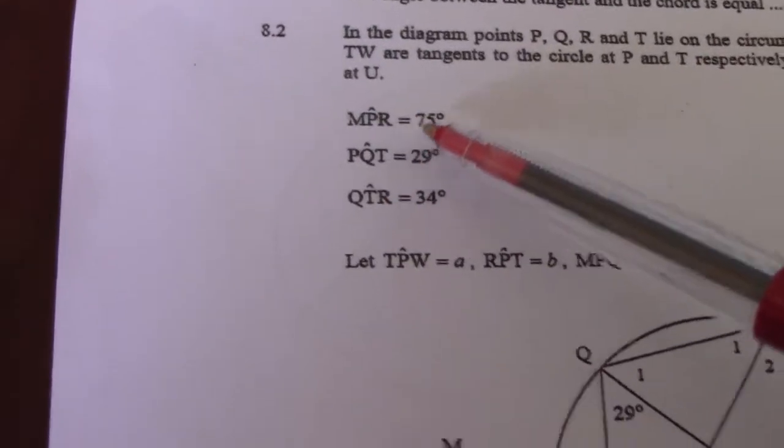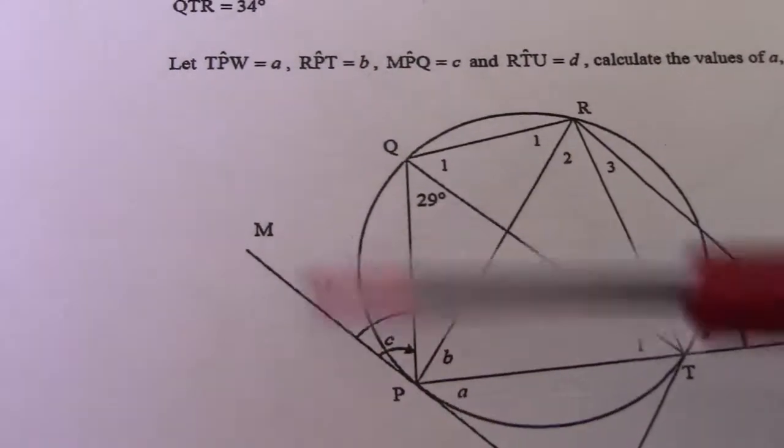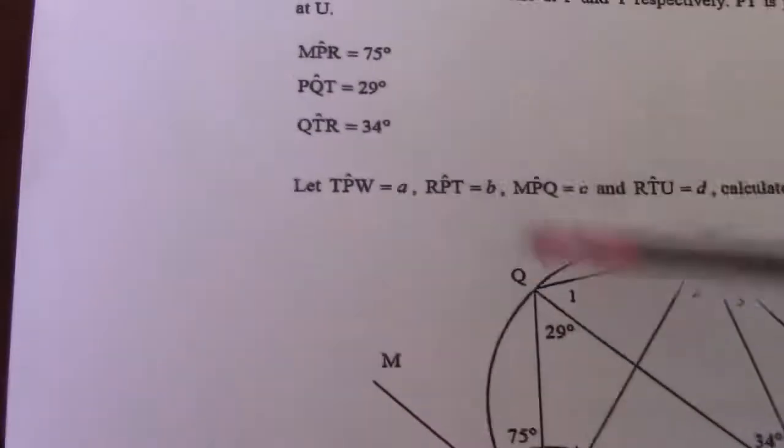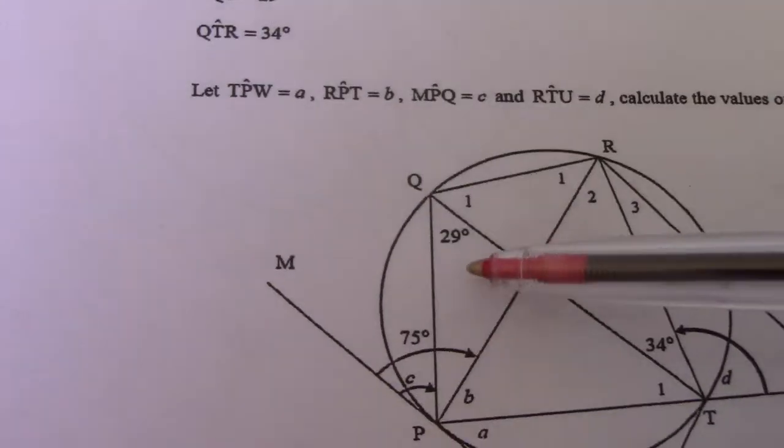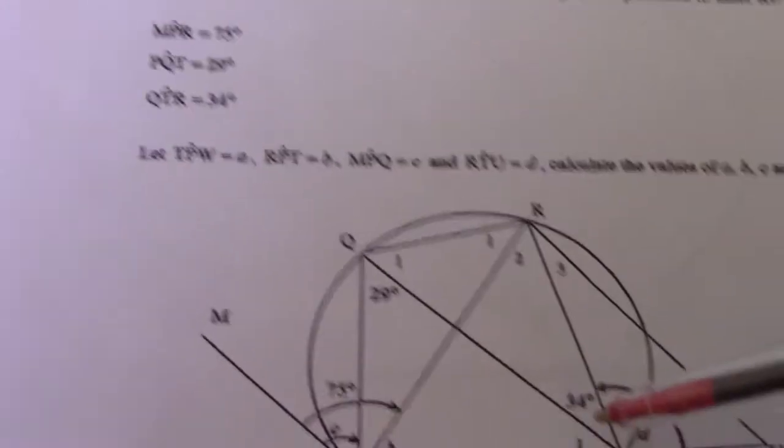Now, given to us, MPR is 75, so MPR is 75 degrees. PQT is 29, and QTR equals 34 degrees.